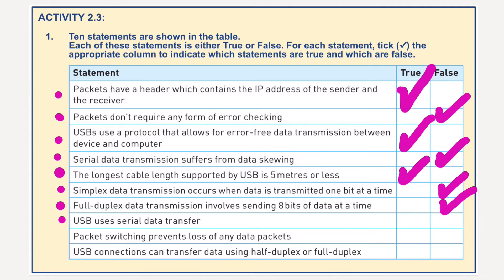USB uses serial data transfer. Yes, that's true — we mentioned that earlier with USB being five meters in length. Packet switching prevents loss of any data packets. Well, that's false. Packets can get lost, and if we're using hop values, packets will get deleted. So packet switching does not prevent loss.